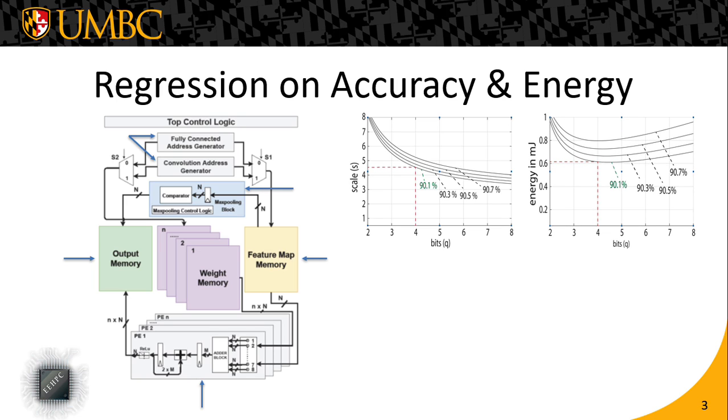When we deploy these networks onto our accelerators, we generate energy results. Once we do the regression using the polynomial we showed in the previous slide, we can generate this energy contour curve. The near optimal solution is the minima of this contour curve. In our use case, this results in a quantization level of four with 90.1% accuracy.